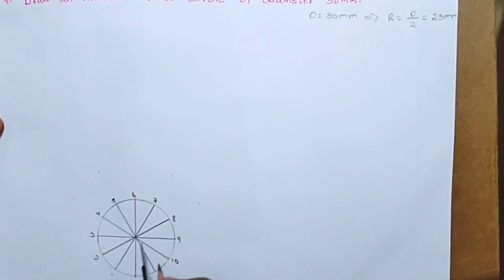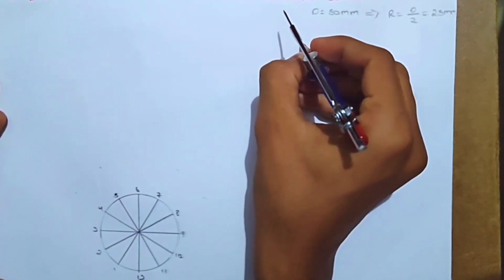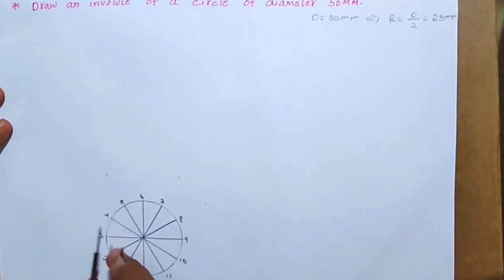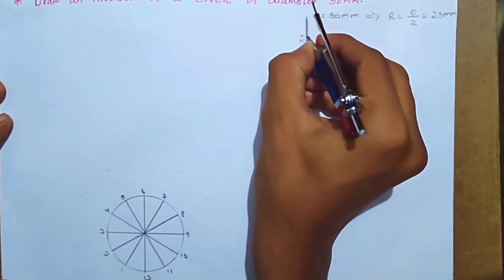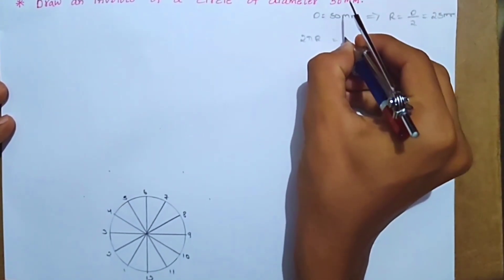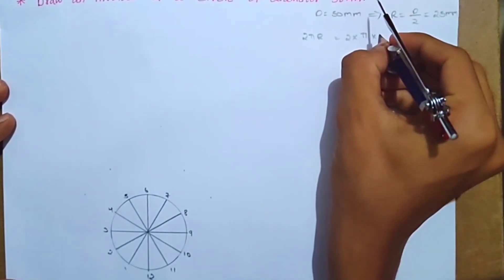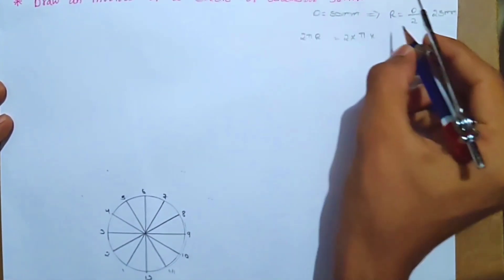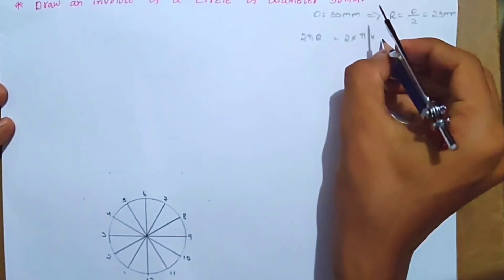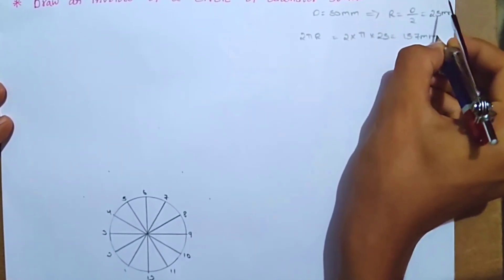Now the horizontal line — what I'm doing is the perimeter of the circle. The perimeter formula is 2πr, that is equal to 2 × π × 25mm, giving the perimeter equal to 157mm.